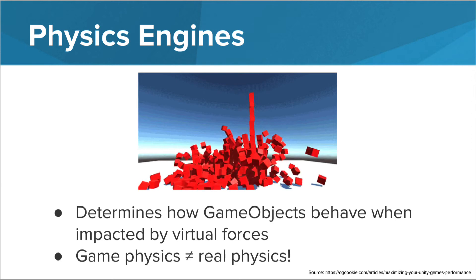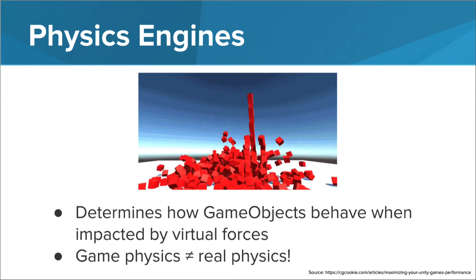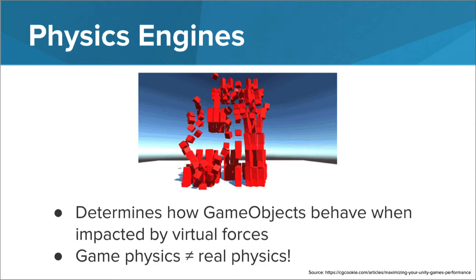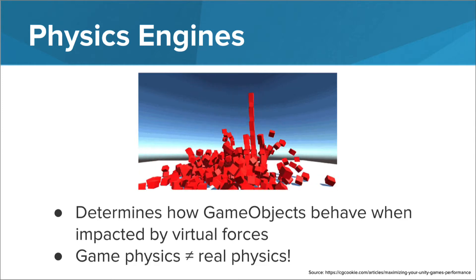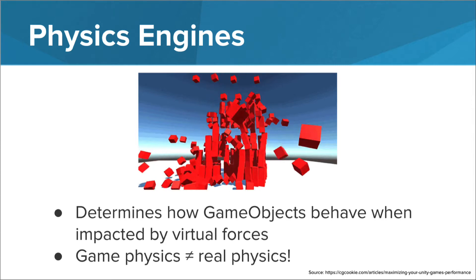Many game engines and game development libraries include a physics engine. A physics engine is a system that simulates aspects of a physical environment so that game objects can accelerate and decelerate correctly and be affected by collisions, gravity, and other forces.